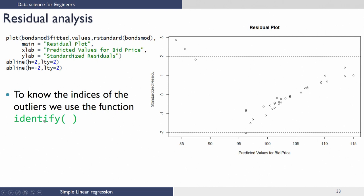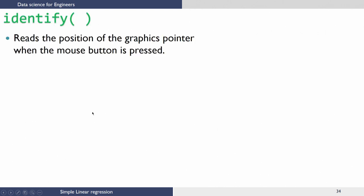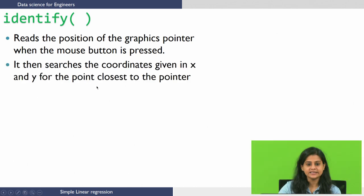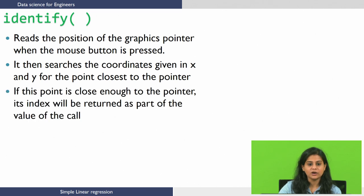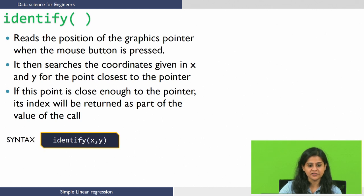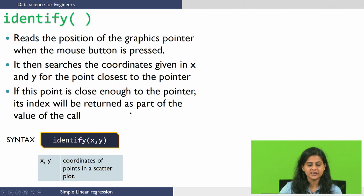The identify function reads the position of the graphic pointer when the mouse button is pressed. It then searches the coordinates given in x and y for the point closest to the pointer. If the point is close enough to the pointer, its index will be returned as part of the value. The syntax is: identify is a function where x and y are input parameters — the coordinates of the points in the scatter plot. Let us see how to use this function to identify the indices.